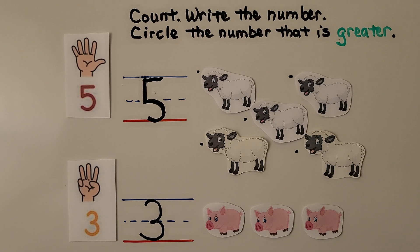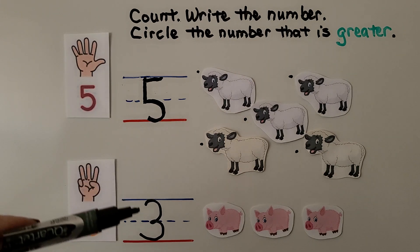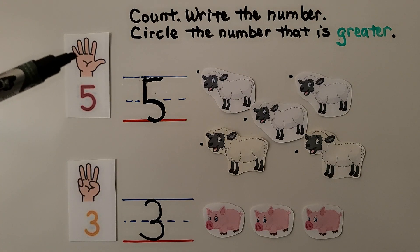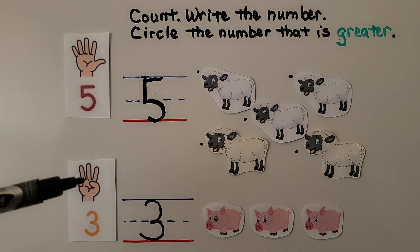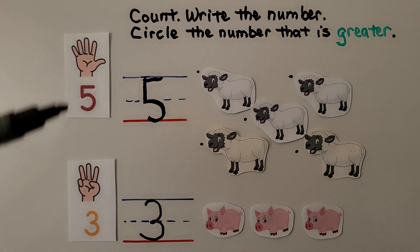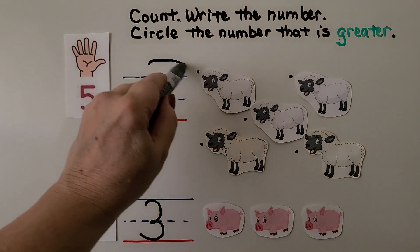Now we're supposed to circle the number that is greater. 5 is greater than 3. There's more fingers being held up than there are for the 3. This is 5 fingers. This is 3 fingers. We have more fingers. 5 is the greater number.